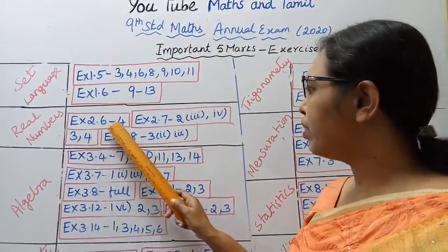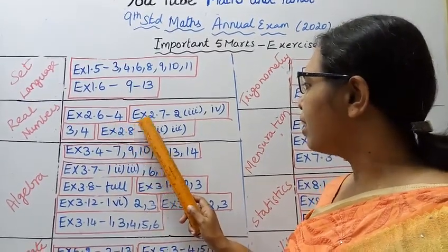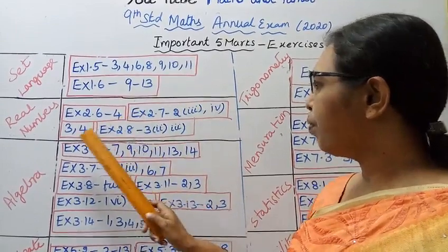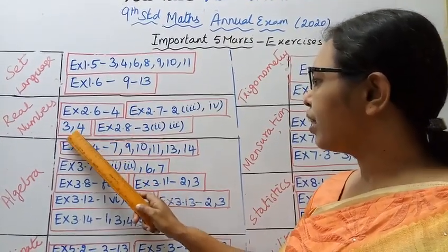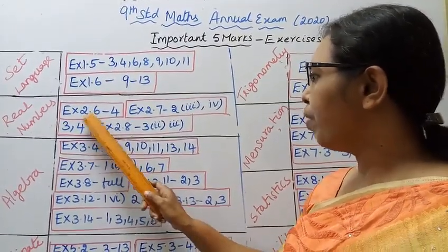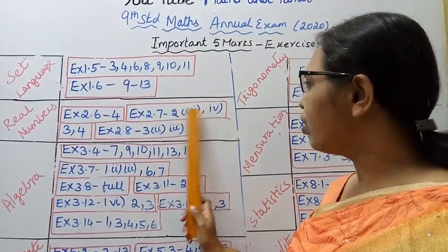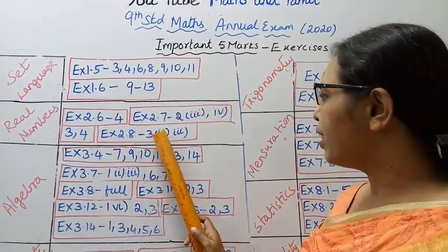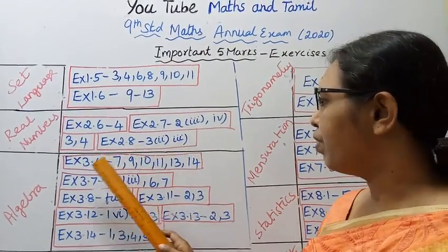Real numbers. Exercise 2.6: problem 4. Exercise 2.7: problems 2, 3, and 4. Exercise 2.8: problems 3 second subdivision and 3rd subdivision.